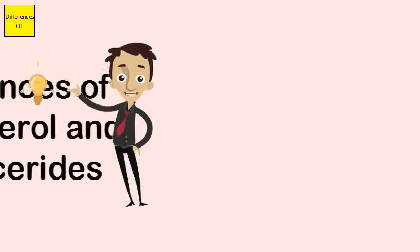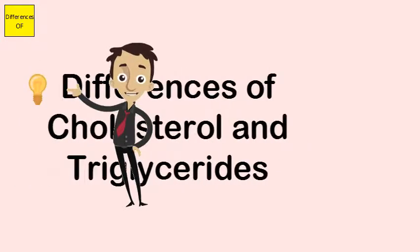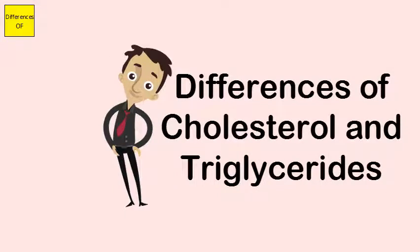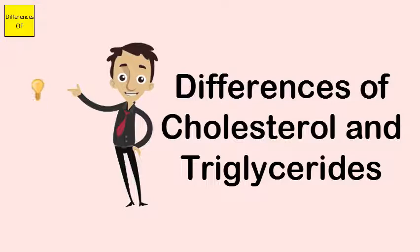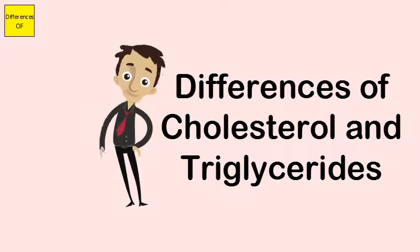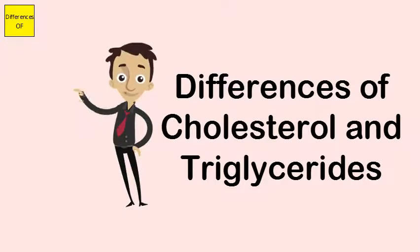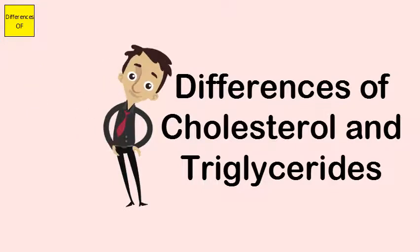Differences between cholesterol and triglycerides: Cholesterol is a fatty steroid, while triglycerides are an ester made of three fatty acids. The normal level of cholesterol is 200 mg/dL, whereas the normal level of triglycerides is 150 mg/dL.